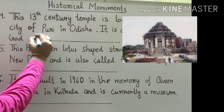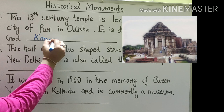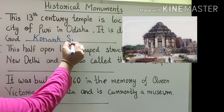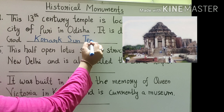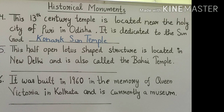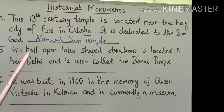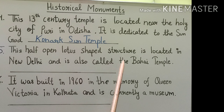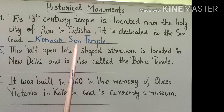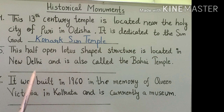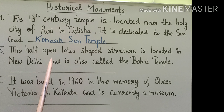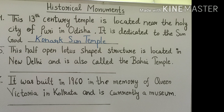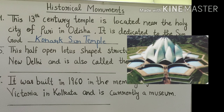Question number 5 is about the Bahai Temple. Its structure is half-open lotus shaped. It is located in New Delhi and is also called the Bahai Temple. What is the name of that temple? The answer is Lotus Temple.